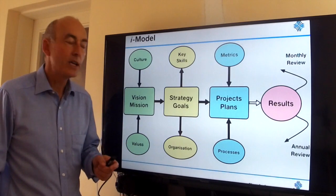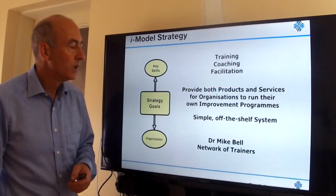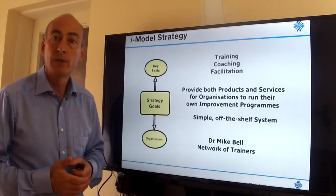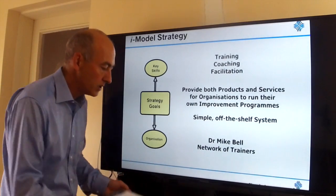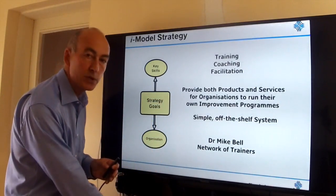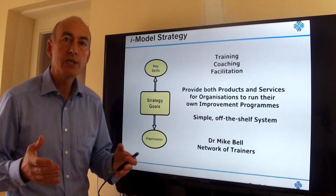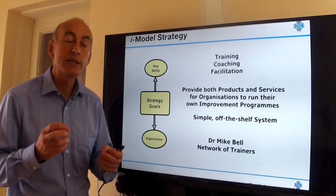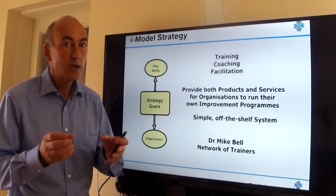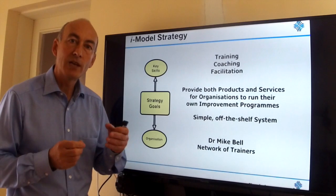Let's move on and look at the middle section of the I Model — the yellow part — which is how we do it. We provide both products and services for organizations to build their own improvement program. Products are a series of books, training slides, and other materials that you can pick up and train within your own organization. The services are training, coaching, and facilitation. Remember the concept of amplification — we do a little bit and you amplify through the rest of the organization, perhaps taking us on for a few days, but certainly not weeks and months.